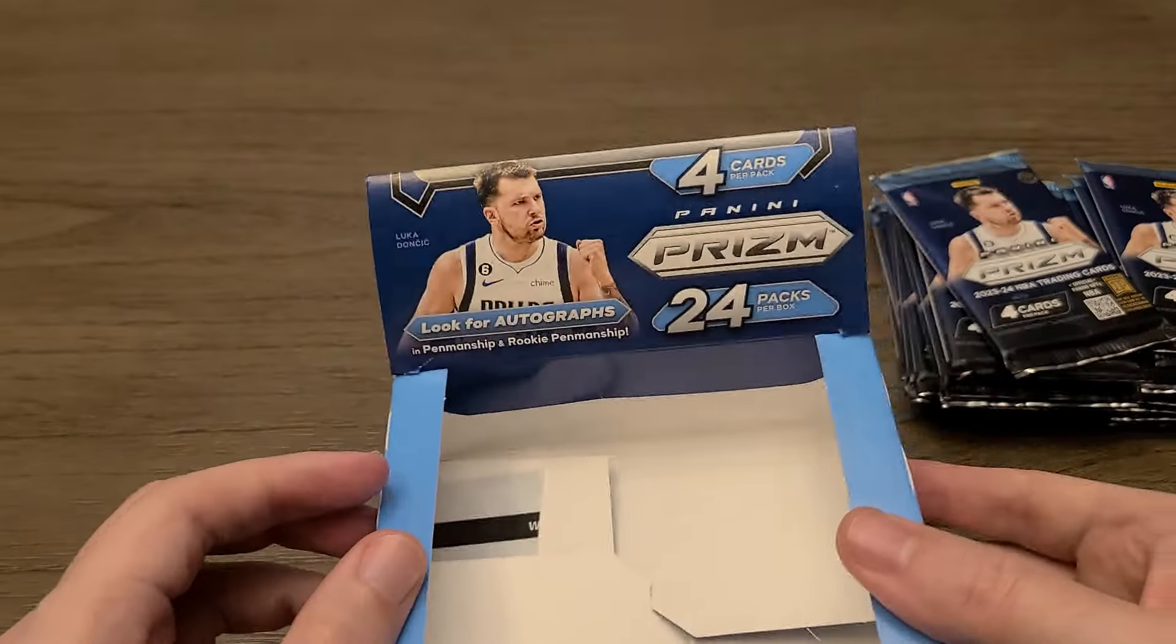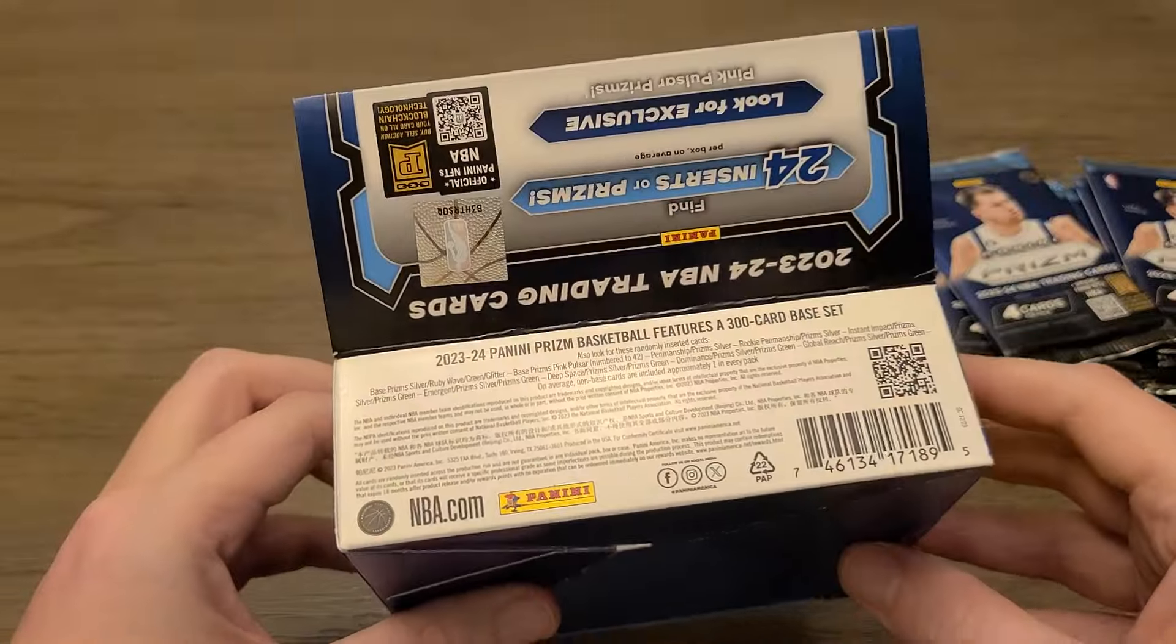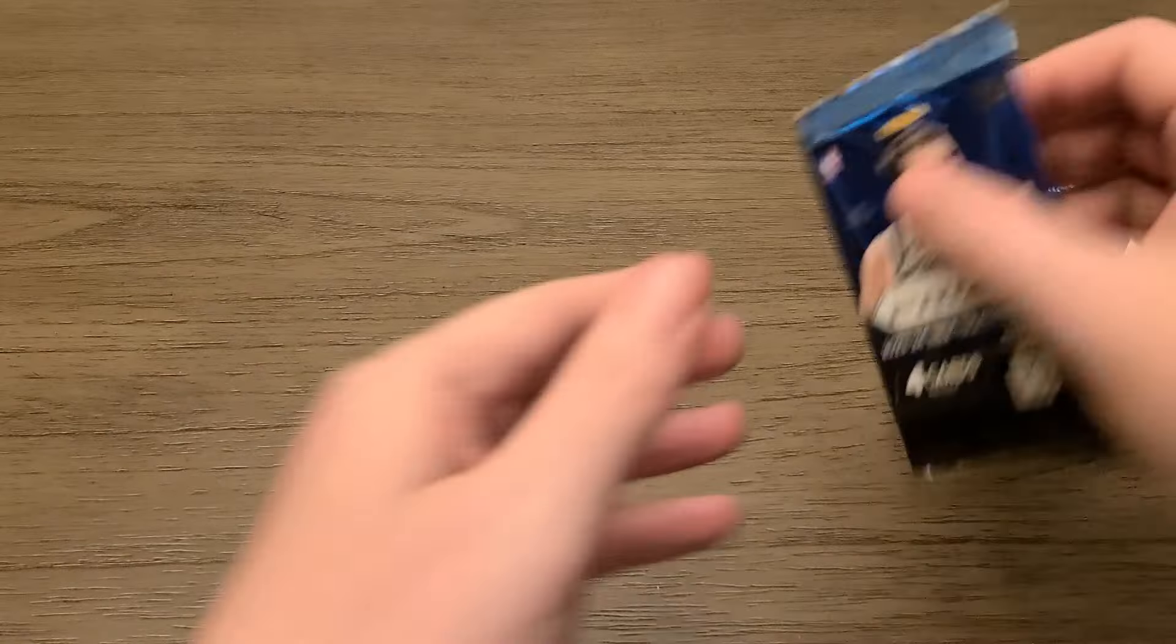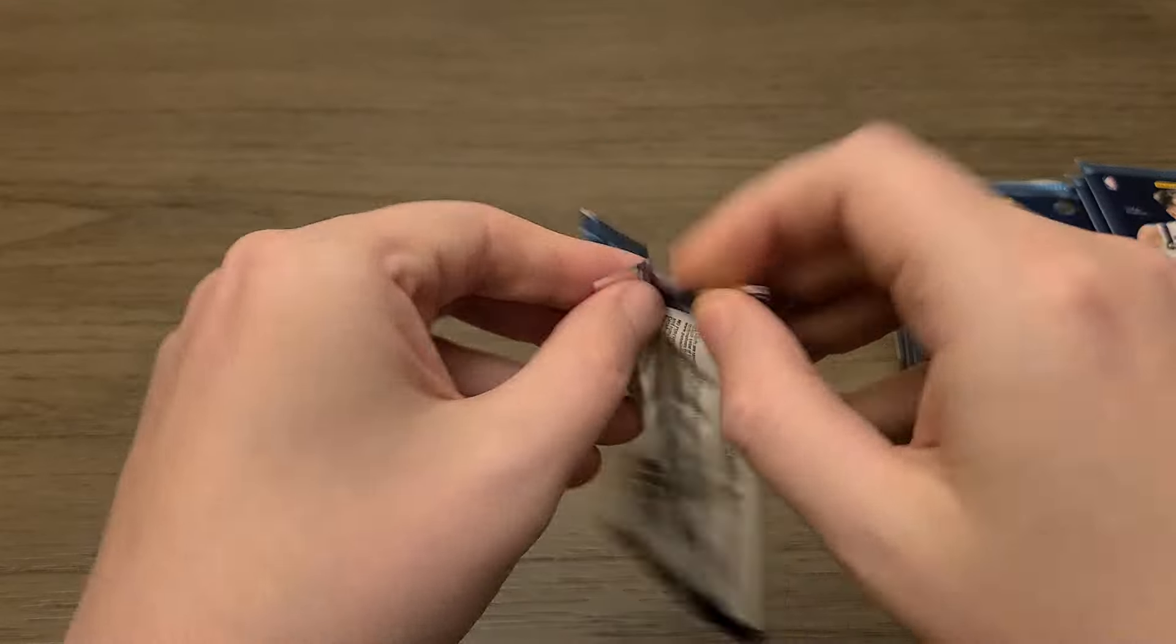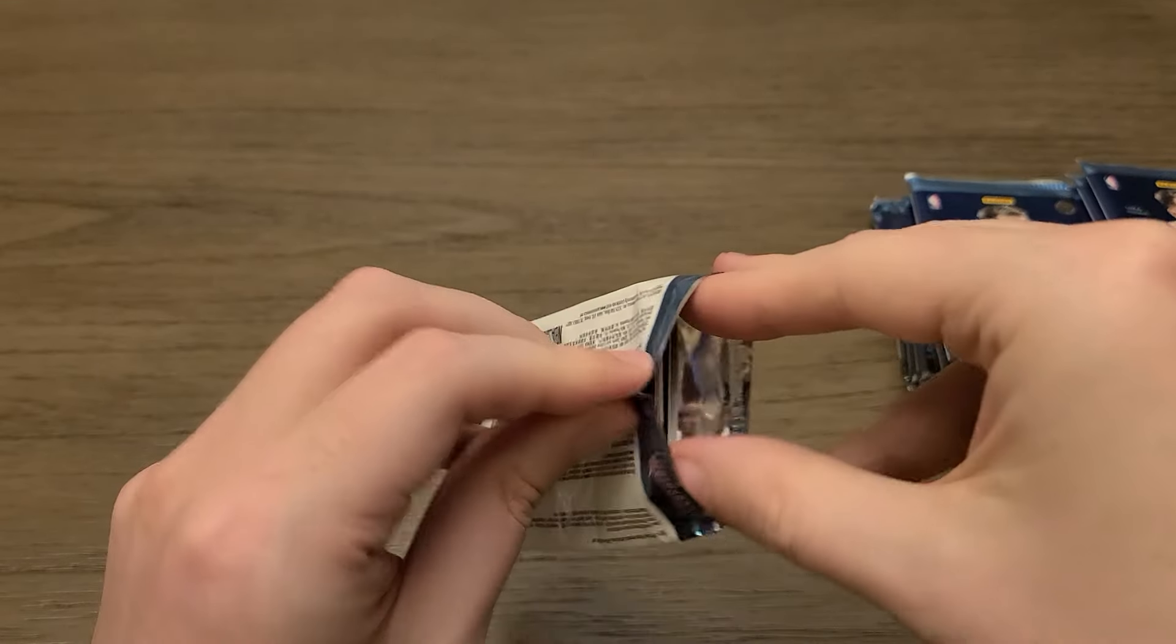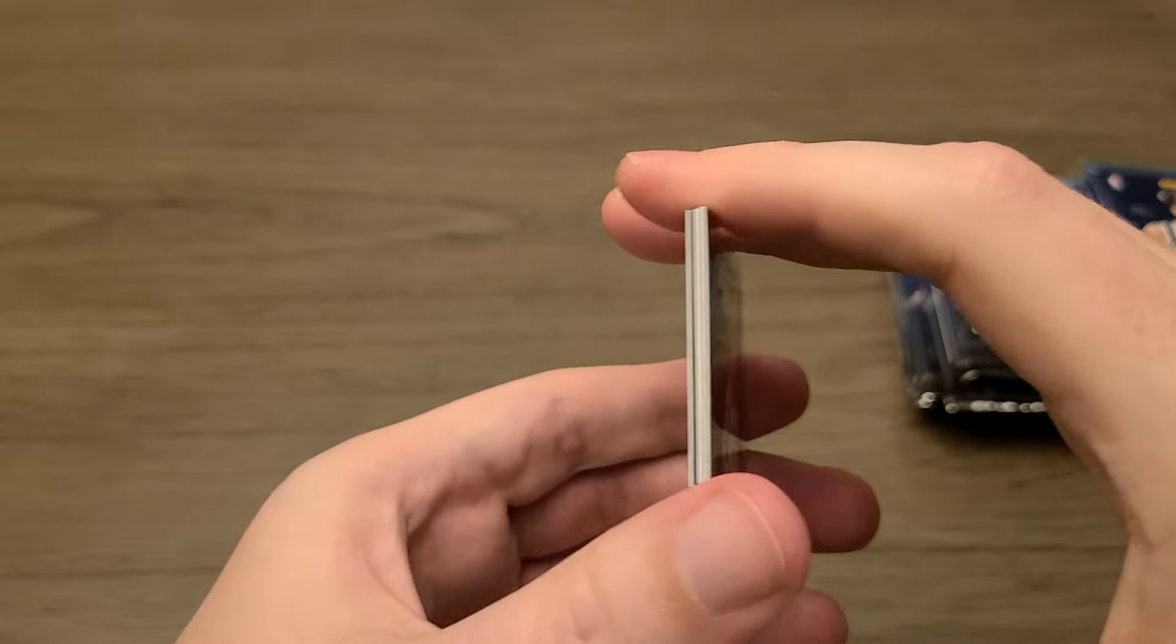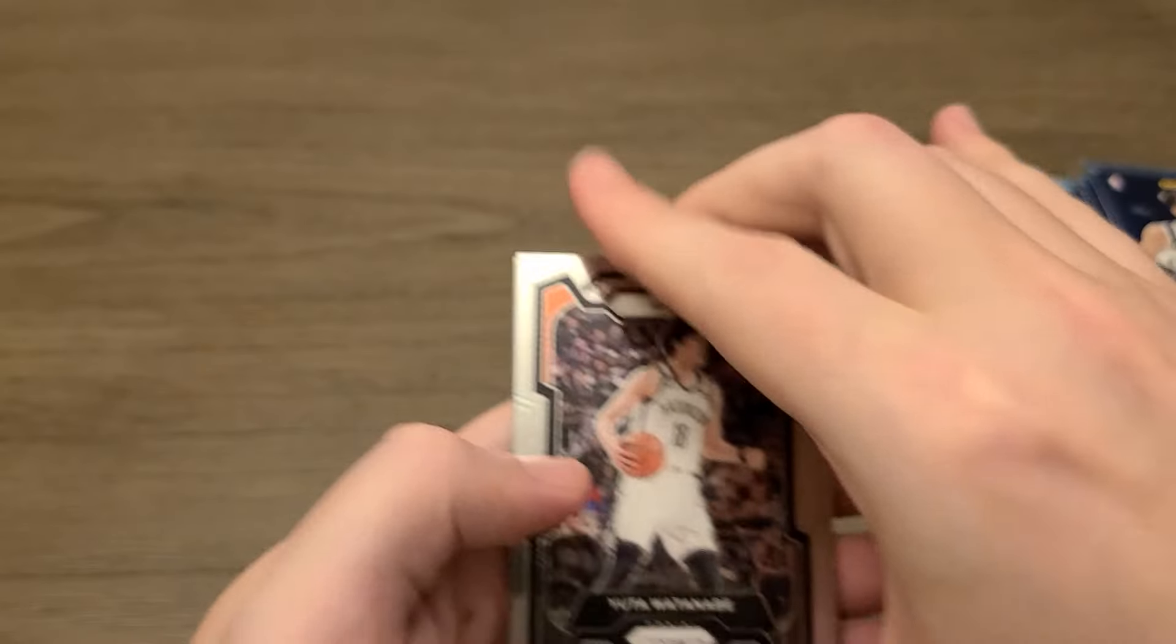That's pack number one. Look for autographs. I don't know if there's anything retail exclusive. Pink Pulsar Prisms. And they say you're going to get about one non-base card in every pack. So each pack has four cards. Three will be base cards and then one will be an insert of some kind.